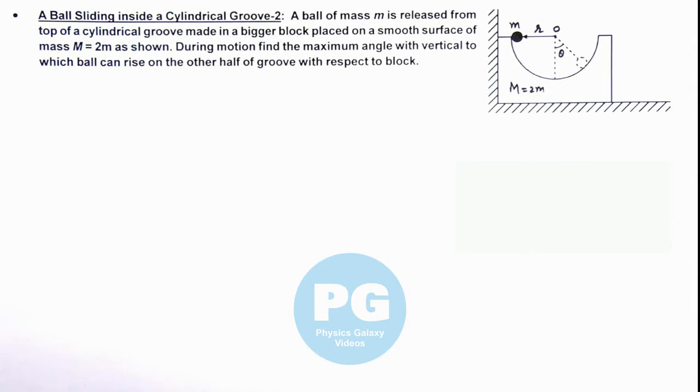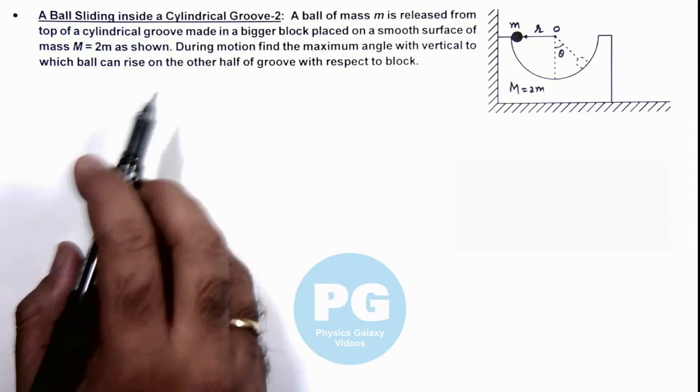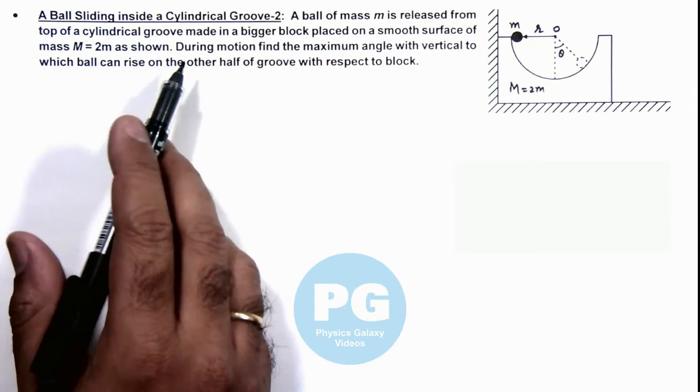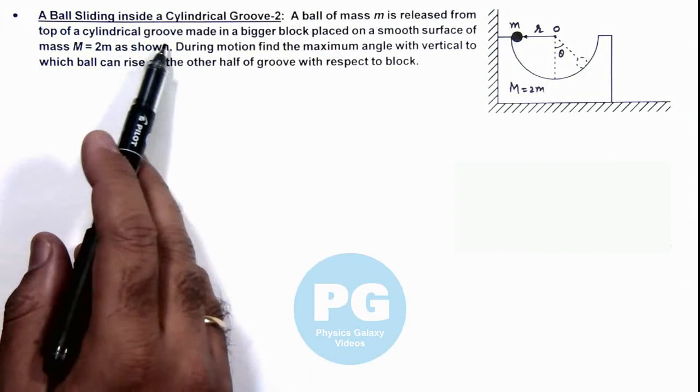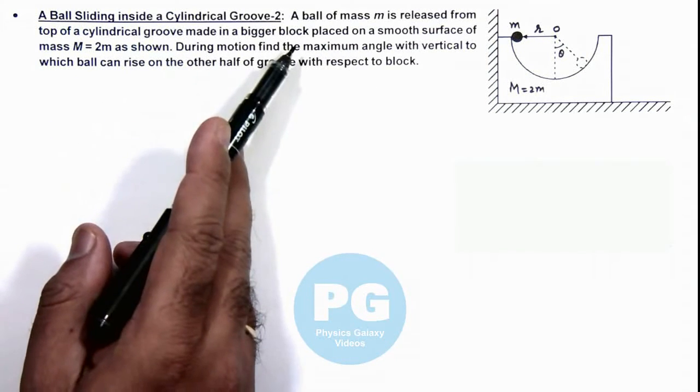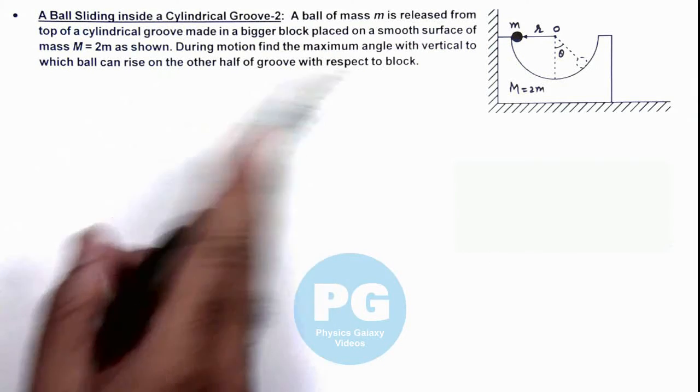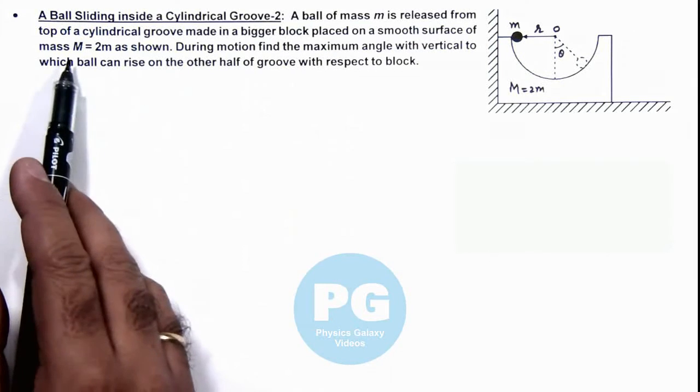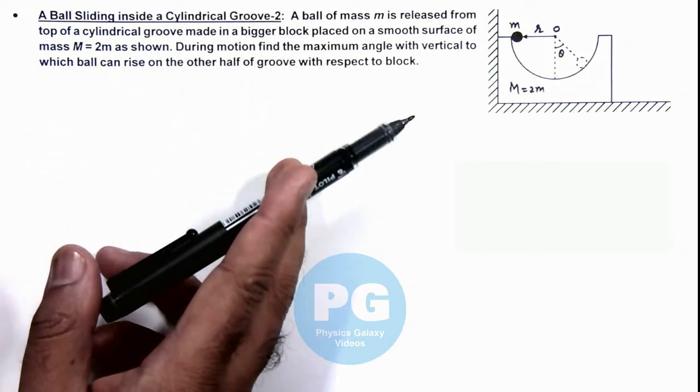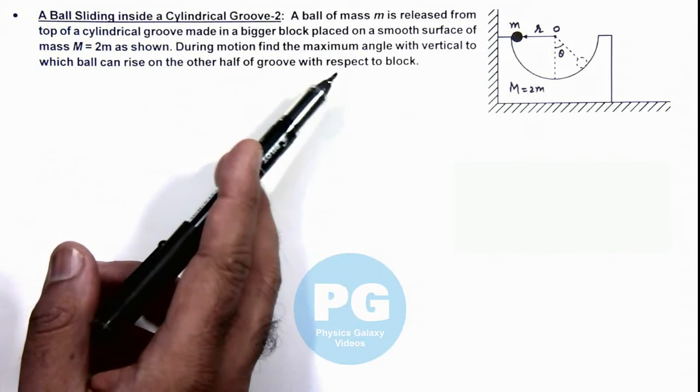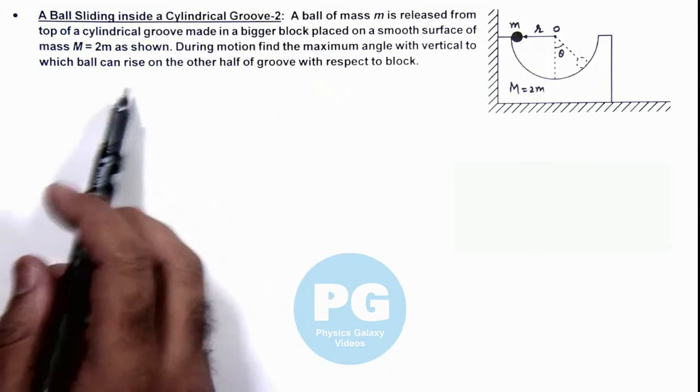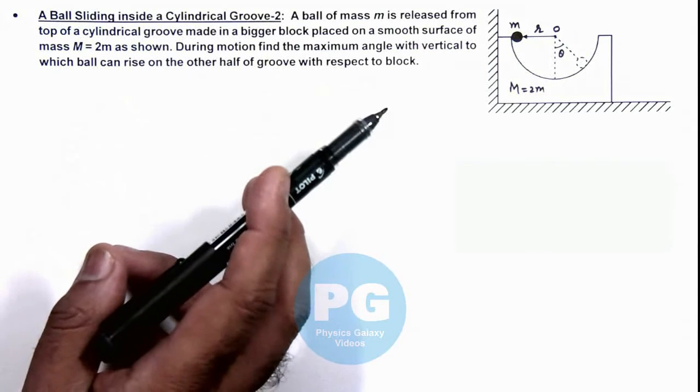In this illustration, we'll discuss another case of a ball sliding inside a cylindrical groove. Here we are given that a ball of mass m is released from top of a cylindrical groove made in a bigger block, placed on a smooth surface of mass M = 2m as shown. During motion, we are required to find the maximum angle with vertical to which the ball can rise on the other half of groove with respect to this block.